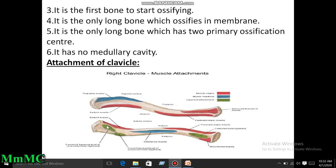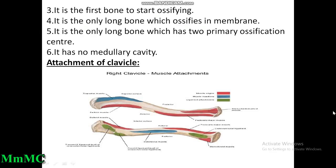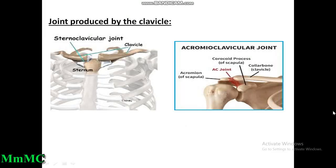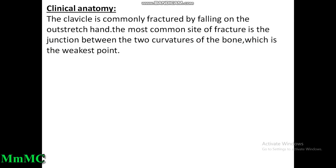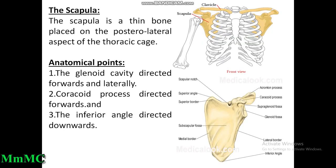Joints produced by the clavicle: the sternal end of the clavicle articulates with the clavicular notch of the sternum to form the sternoclavicular joint, which is the saddle variety of synovial joint. The flattened acromial end articulates with the acromion of the scapula to form the acromioclavicular joint, which is the plane variety of synovial joint. Clinical anatomy: the clavicle is commonly fractured by falling on the outstretched hand; the most common site is the junction between the two curvatures, which is the weakest point.